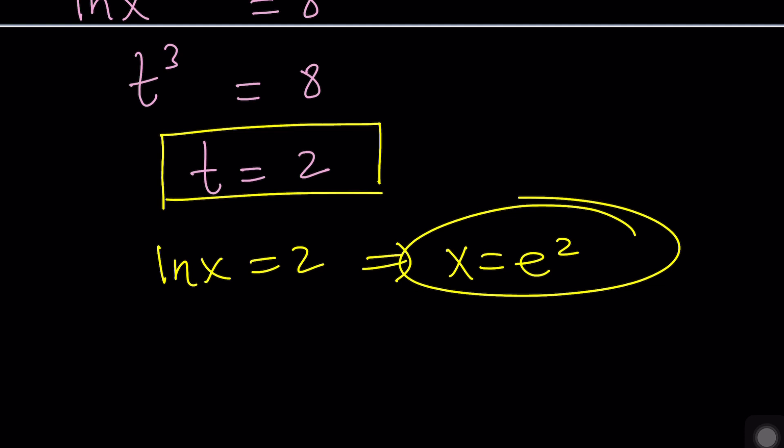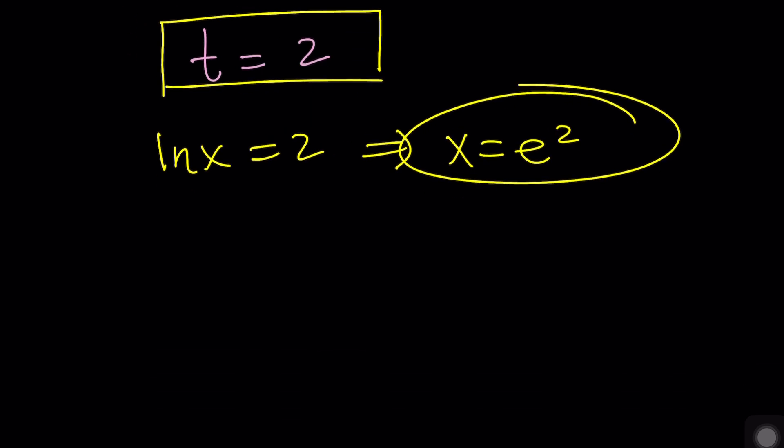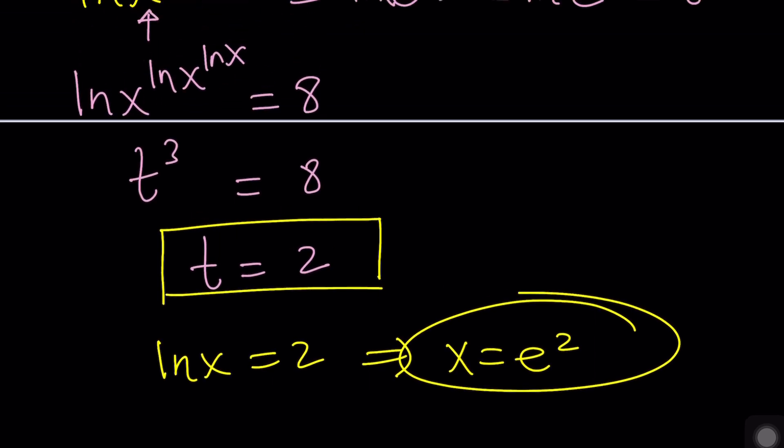But maybe before we get into that, I can quickly show you what the complex solutions are going to look like, sort of. Okay? Now, where do the complex solutions come from, first of all? Well, they come from cube roots of 8, because every non-zero complex number has 3 cube roots.